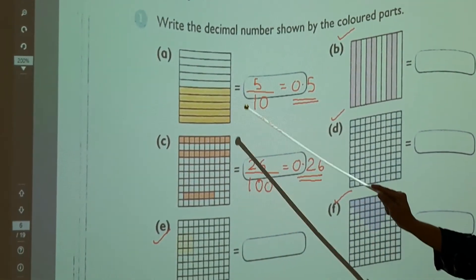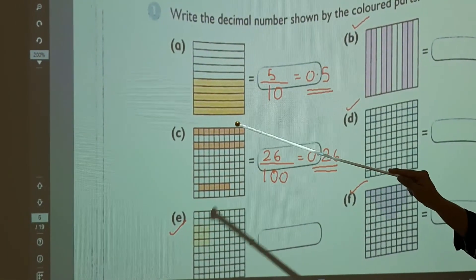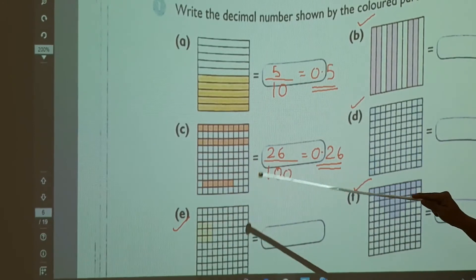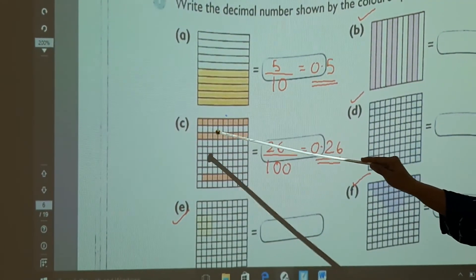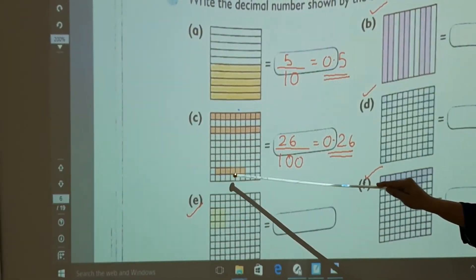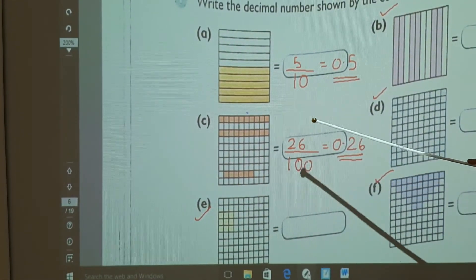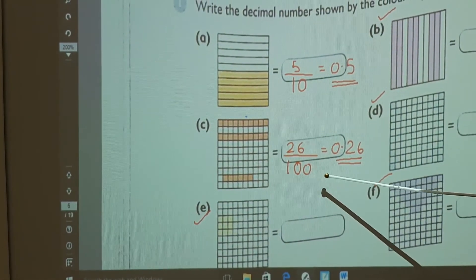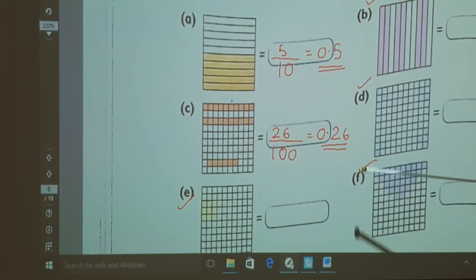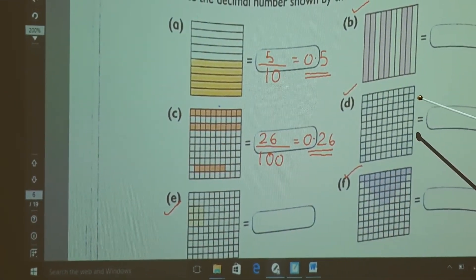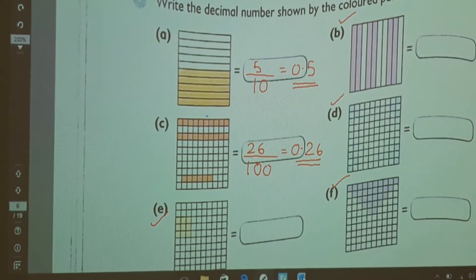It is divided into 100 equal portions. How many portions is colored here? One row is 10, 20, 21, 22, 23, 24, 25, 26. 26 by 100. That means there are two zeros, that means two decimal places: 0.26. Is it clear? Same way you do D, E, and F as homework.